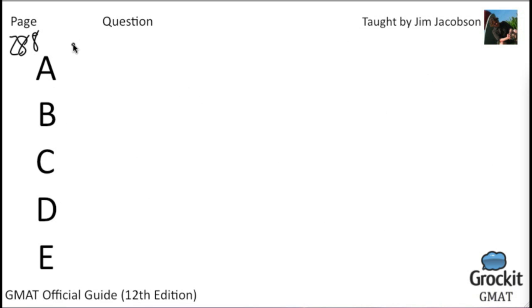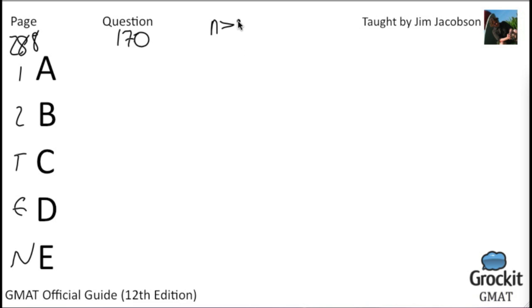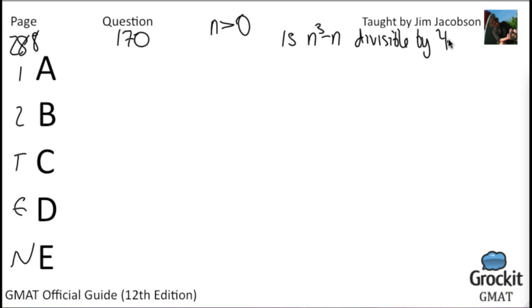Question 170: if n is a positive integer, is n³ − n divisible by 4? We can factor: n³ − n = n(n² − 1) = n(n+1)(n−1). This is actually the product of three consecutive integers: (n−1), n, and (n+1). This factored form will be useful when we look at the statements.